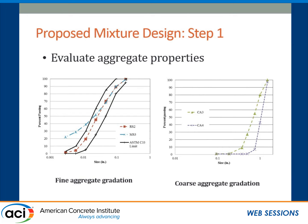The first step is pretty simple: you have to determine the physical properties of aggregates — aggregate gradation, specific gravity, and absorption. The graph on the left shows the gradation for fine aggregate. The two black lines show the upper and lower margins of ASTM C33 sand gradation requirement. The red line is an ASTM C33 fine aggregate, but the blue line, which is MS3 manufactured sand, does not meet that gradation requirement and also has high fine content.